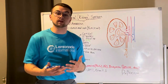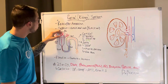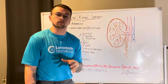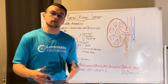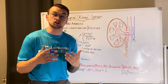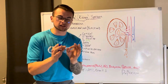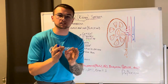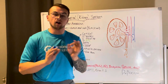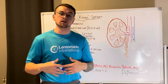We know that we have two kidneys, and the nephron is the functional unit of the kidney. The functional unit is the smallest unit possible where all of the functions of the kidney are occurring.